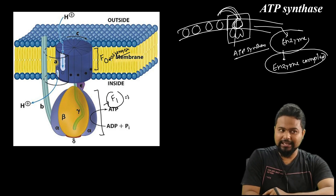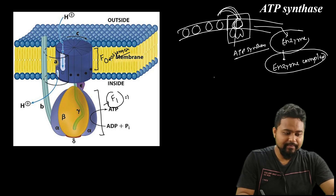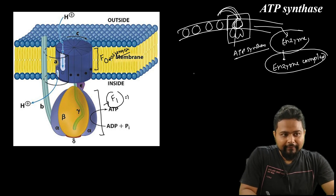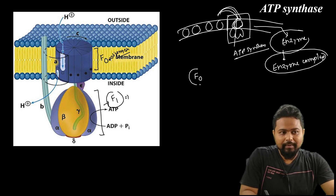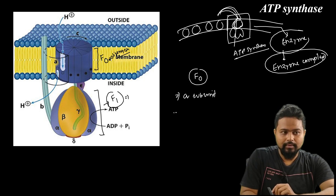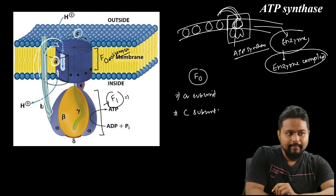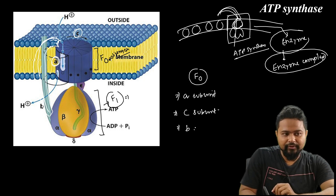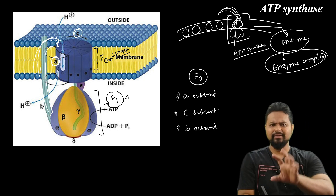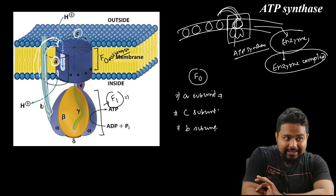So the enzyme has two main components. The upper part is F1 and the lower part is F0. F1 is also called the F1 particle. F0 and F1 are separate particles. Now, looking at the F0 particle, it contains the A subunit and the C subunit.